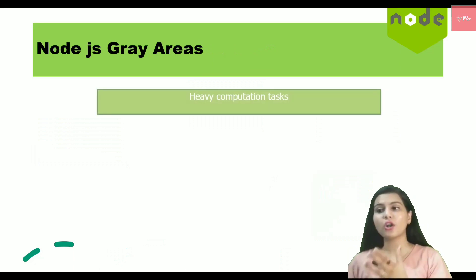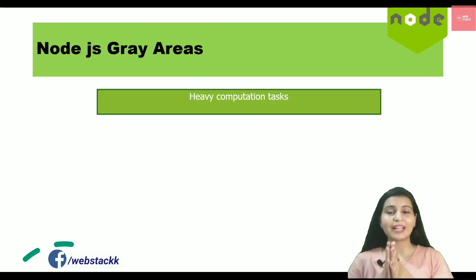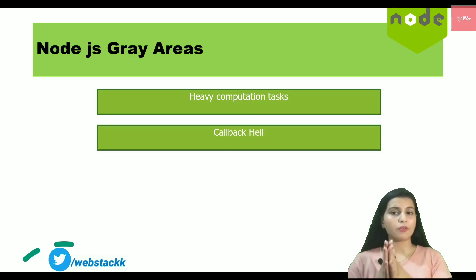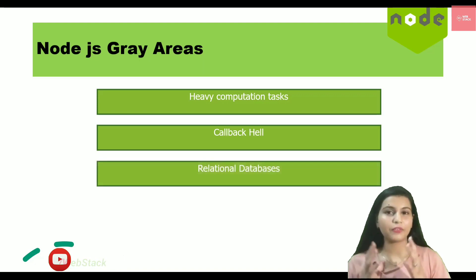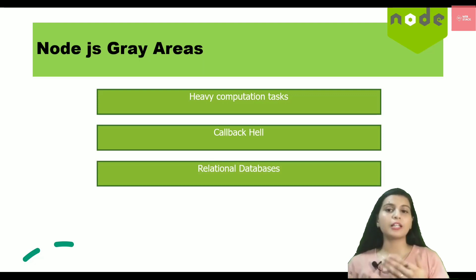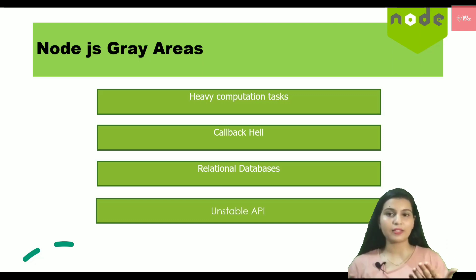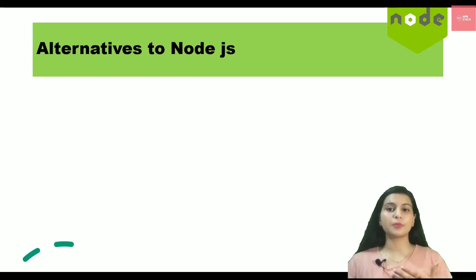Node.js does not work very well with heavy computation tasks — whenever a lot of processing or calculations are required, Node.js doesn't perform well. With asynchronous programming, you end up writing nested callbacks, which is called callback hell. It doesn't work well with relational databases but works efficiently with NoSQL databases like MongoDB. Also, because it is a dynamic language, its APIs frequently get updates and changes, which can sometimes create problems.